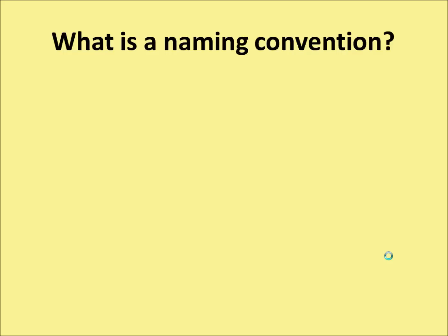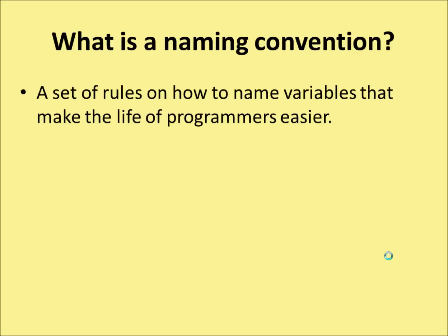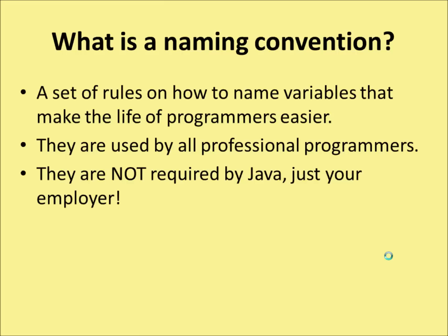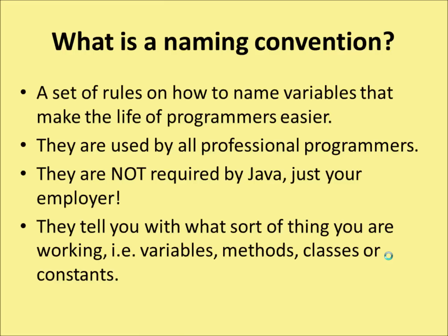Welcome to this video on naming conventions in Java. A naming convention is a set of rules on how to name variables that make the life of a programmer easier. They're used by all professional programmers. They're not required by Java, but they will be required by your employer. If you don't name things correctly, your employer will not be happy. They tell you what sort of thing you're working with — a variable, a method, a class, or a constant — and by changing the capitalization of your variable names you can show which of these is being used.